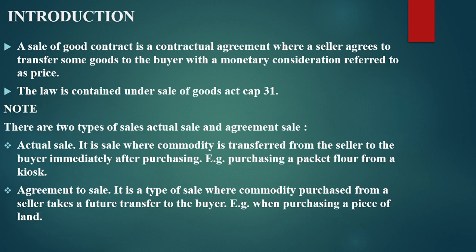For instance, when purchasing a piece of land or purchasing a car, before the logbook is processed it takes a long duration of time. Also, when using online selling companies like Jumia or Oppia, before the goods are delivered to you, it is an agreement to sale — they deliver to you a certain commodity at a certain time on a certain date.